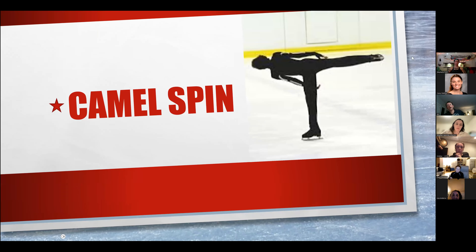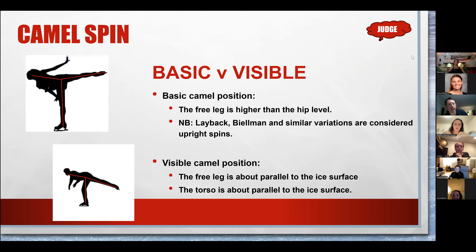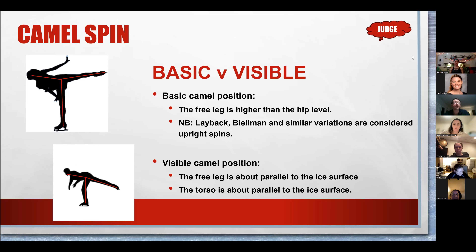For the camel spin, in the basic camel position the free leg has to be higher than hip level. Layback, Biellmann, and similar positions are usually categorized within the upright spin. What we don't want to see is the drooping free leg, where it's about parallel to the ice but has gone below the hip level. The torso also has to retain a parallel-to-the-ice-surface position. If it gets any higher, it will likely move into the upright category.